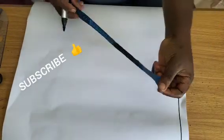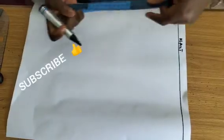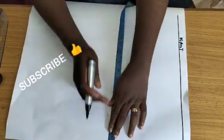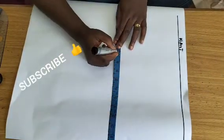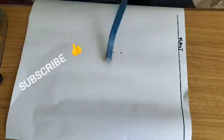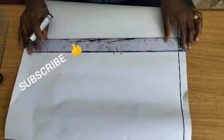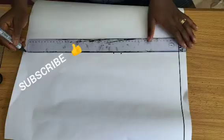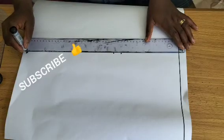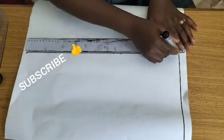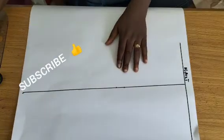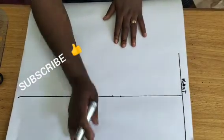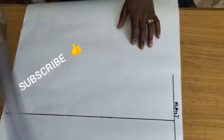For my skirt waist drafting, from the tip of my paper I'm going to come in by 10 inches. Then that is where I'm going to have the side of my skirt. The skirt side will be drafted together with the flare.